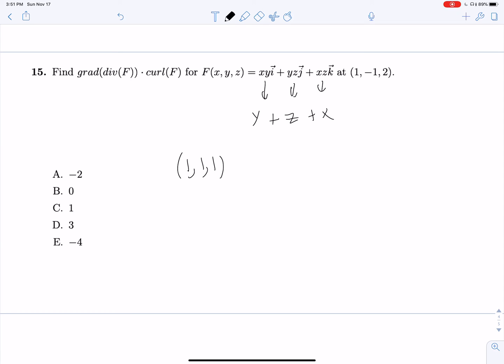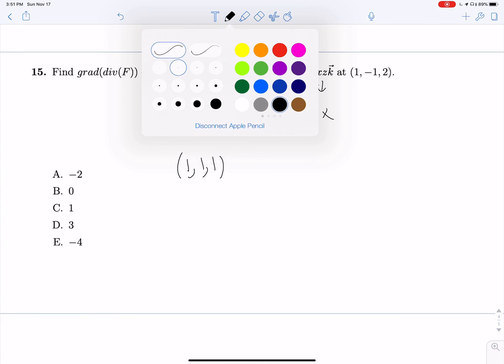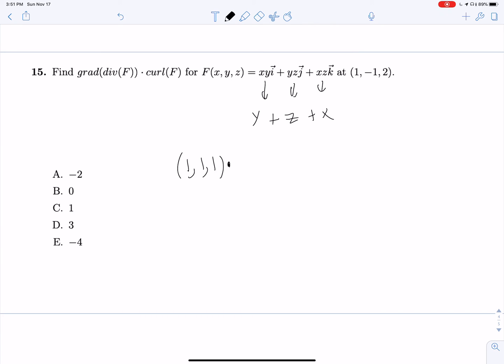So there's our first half of the equation. Now we're dotting this with the curl of F, which we can set up. Partial partial x, partial partial y, partial partial z, crossed with xy, yz, zx. So now taking that, we are going to get negative y, negative z, and negative x.